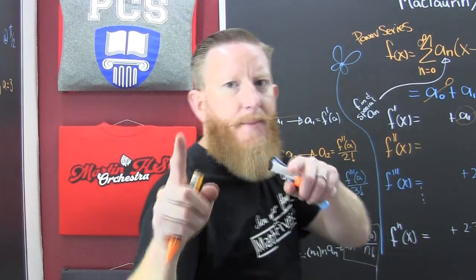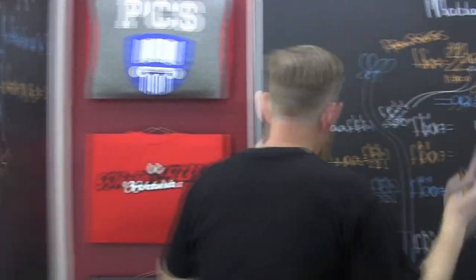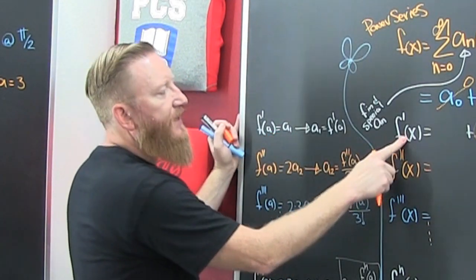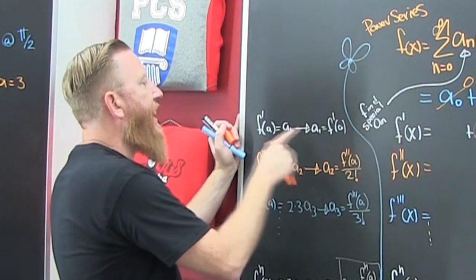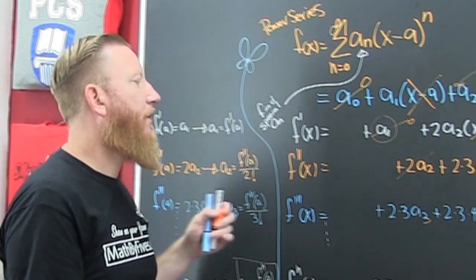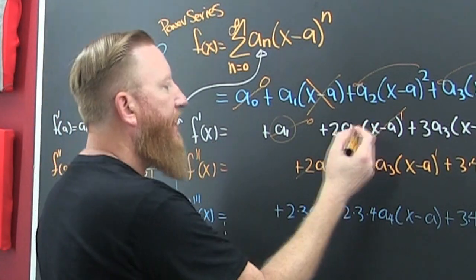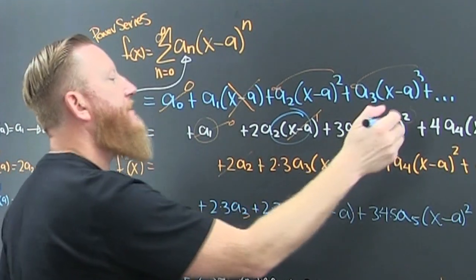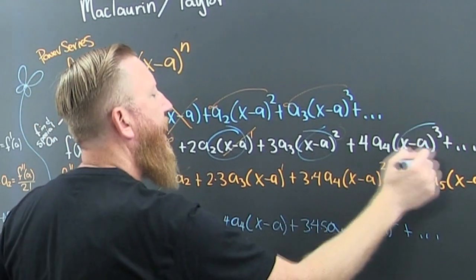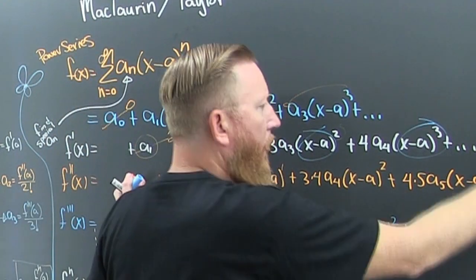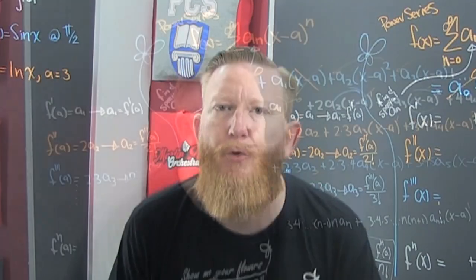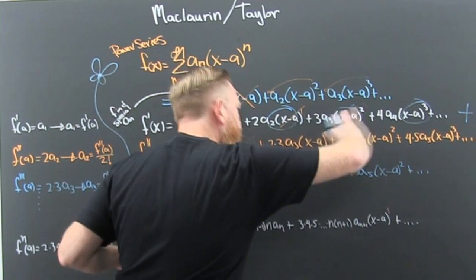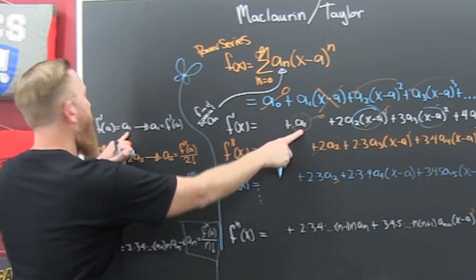Now I'm going to evaluate this — the first derivative at the special value A, the center. What happens? A minus A is a big fat zero. A minus A is a big fat zero. It's identically zero after that, and you're only going to be left with that one term.